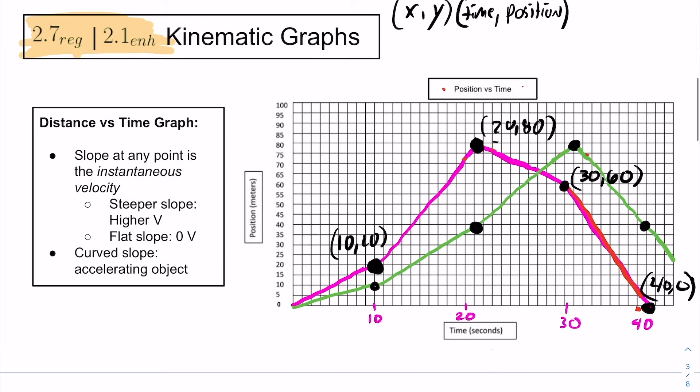All right. So, what if we wanted to find instantaneous velocity? Well, to find instantaneous velocity, there are really two ways. You can do some calculus with derivatives, or you could find the slope of a position versus time graph.